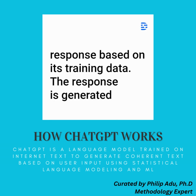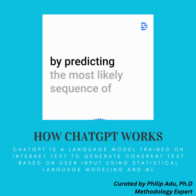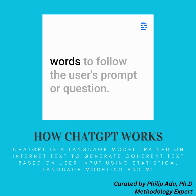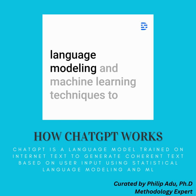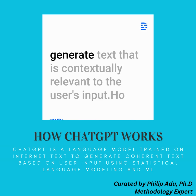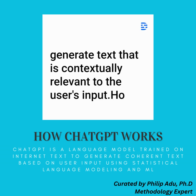The response is generated by predicting the most likely sequence of words to follow the user's prompt or question. In other words, ChatGPT uses a combination of statistical language modeling and machine learning techniques to generate text that is contextually relevant to the user's input.